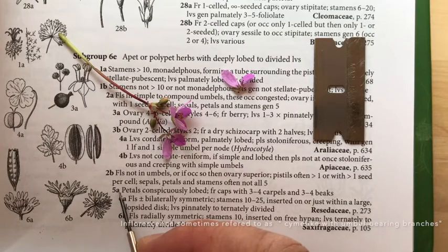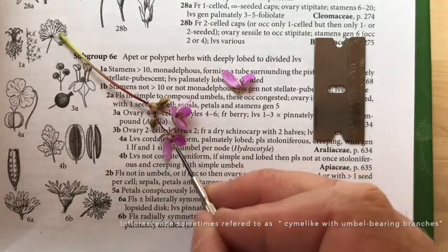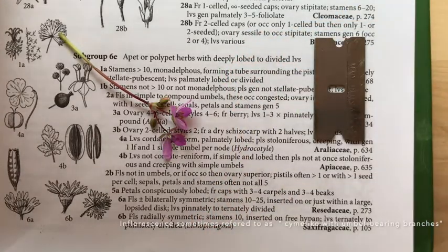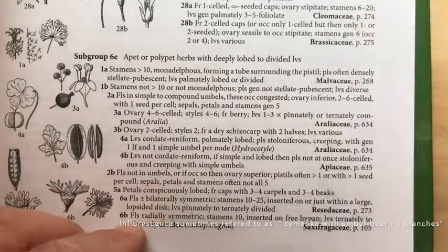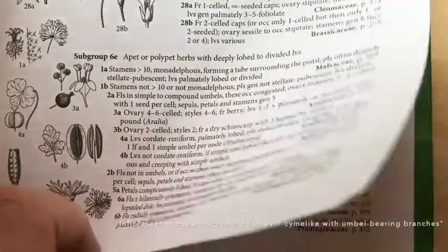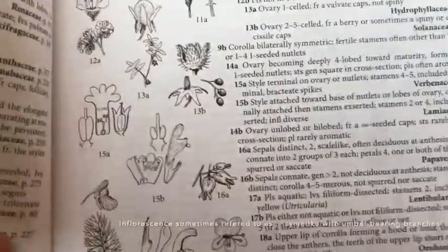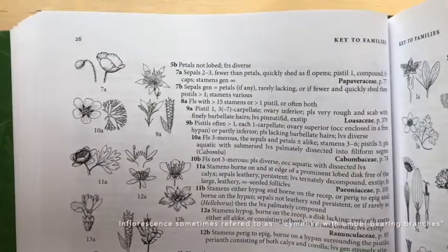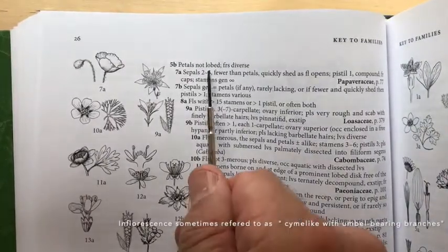Our next couplet says petals conspicuously lobed. Here's our petal, and it's not at all conspicuously lobed. So with that in mind, we're going to flip the page to go to lead 5A in couplet 6E, or 5B - petals not lobed.